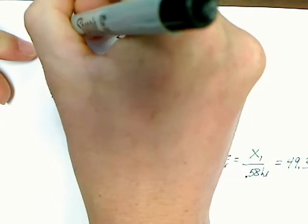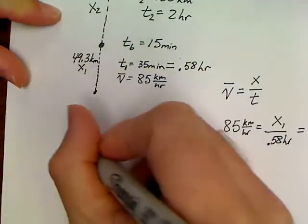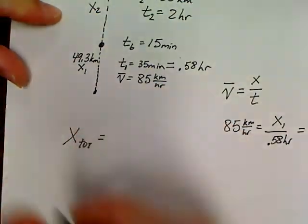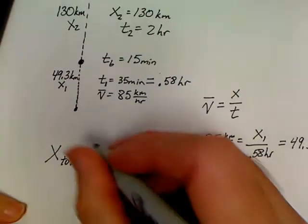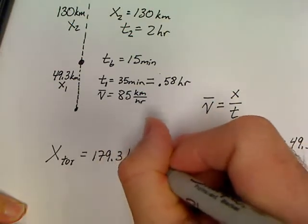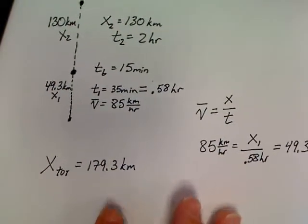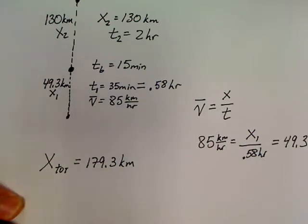Alright. So, now we know everything we need. This is 49.3 kilometers. The second leg was 130. So, if we're looking for X total for the trip, we're going to have 179.3 kilometers. Now, again, this is a very common question for us to get asked. This is the answer for part A.